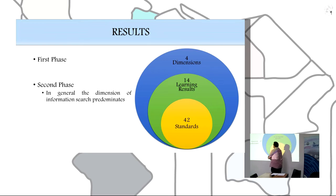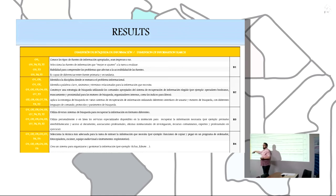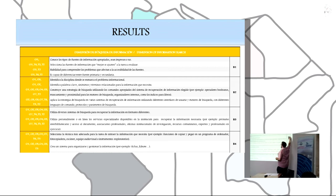In the second phase, we have 14 learning results and 42 standards. Regarding the results obtained in the second phase, we can see these tables. There are the descriptors of the Ministry of Education, the standards of the table of specification and dimensions, and the learning results.